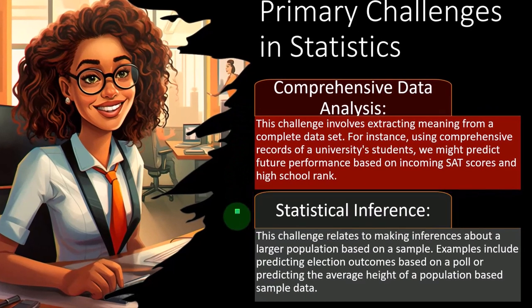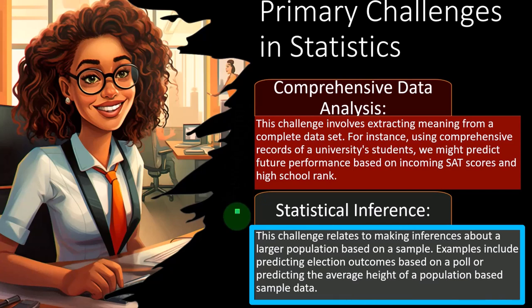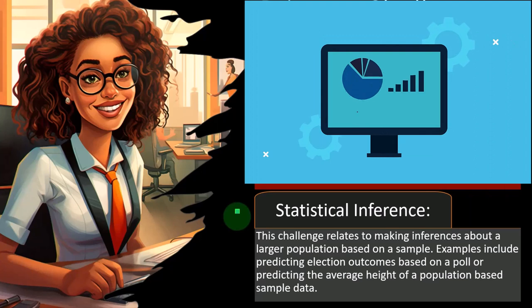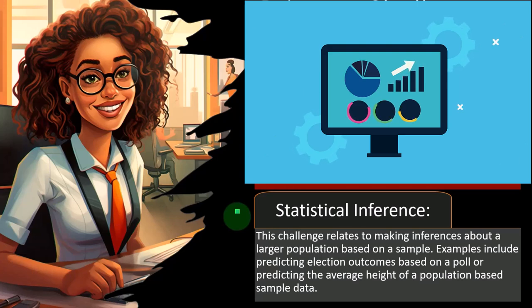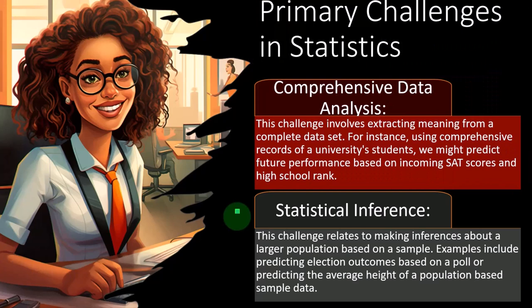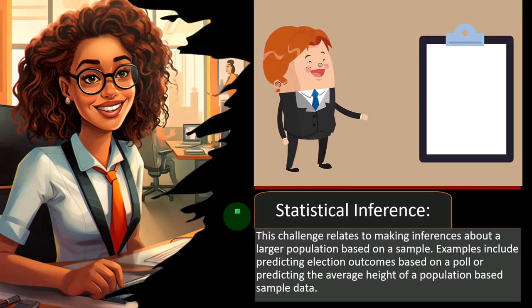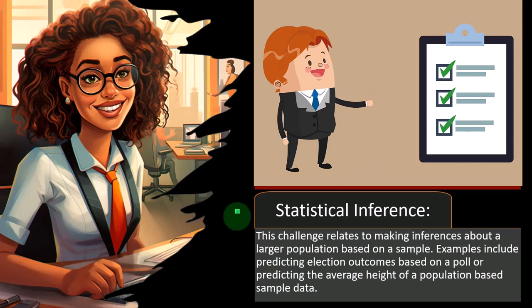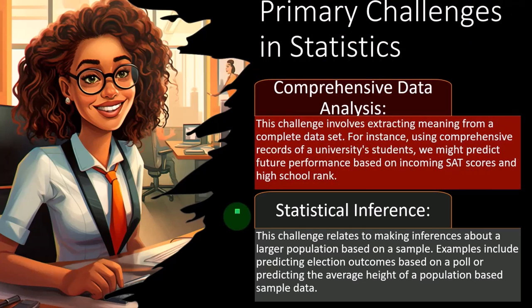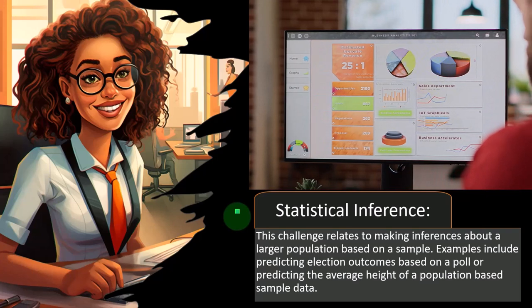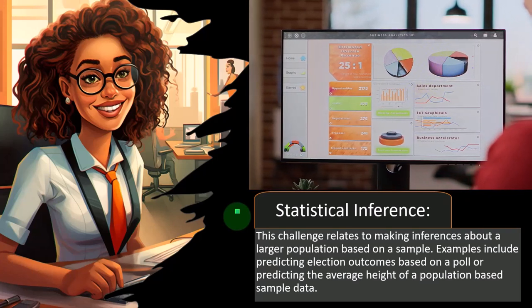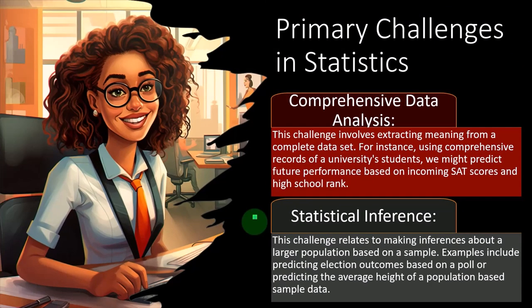Statistical inference involves making inferences about a larger population based on a sample. Examples include predicting election outcomes based on a poll, or predicting the average height of a population based on sample data. You take a sample and try to infer what's going to happen in the full population. A lot of scientific analysis works similarly — you take a sample of a population and see if you can make some kind of statistical analysis about the full population.